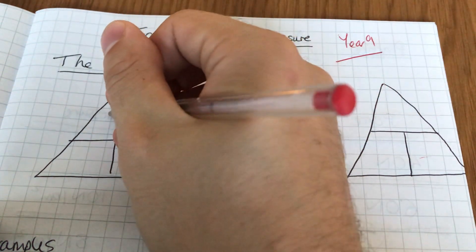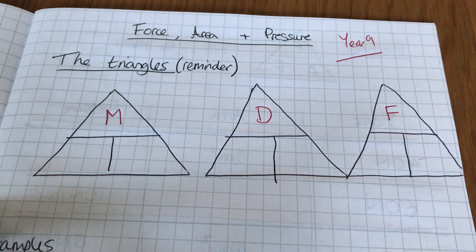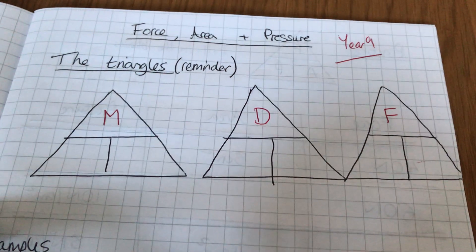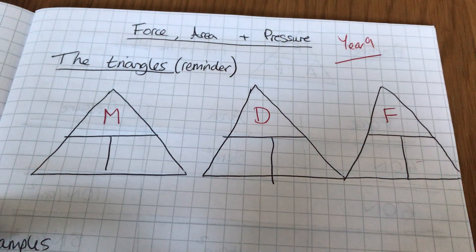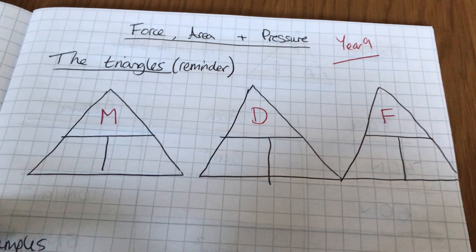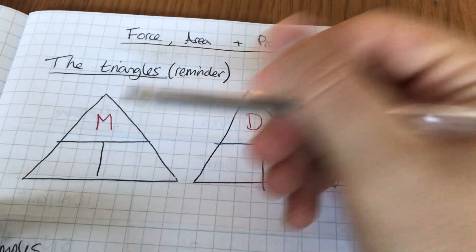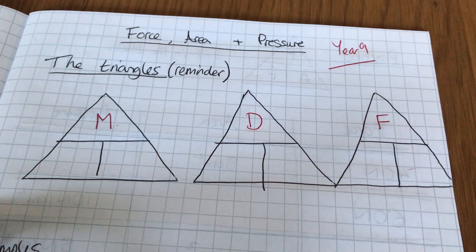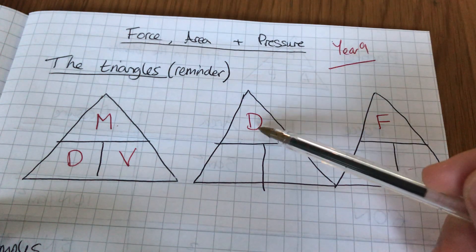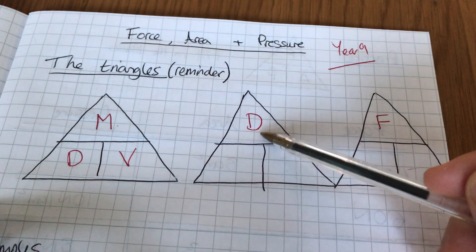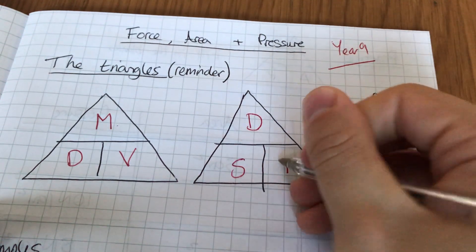Hopefully I'm paused and I'm going to write straight away MDF, because that's how I remember. Or mums don't fart, whatever you prefer. But MDF at the top there. Now I remember that when maths is involved, density and volume come into play, so I'm going to put D and V at the bottom.